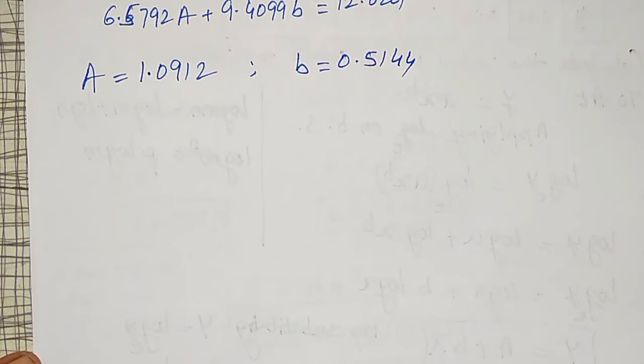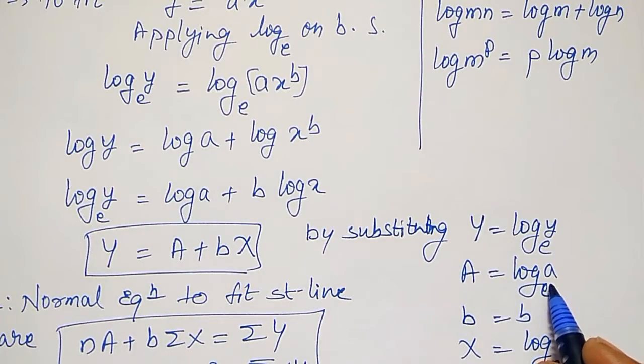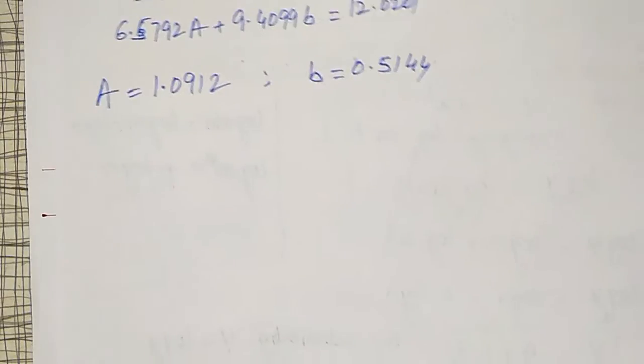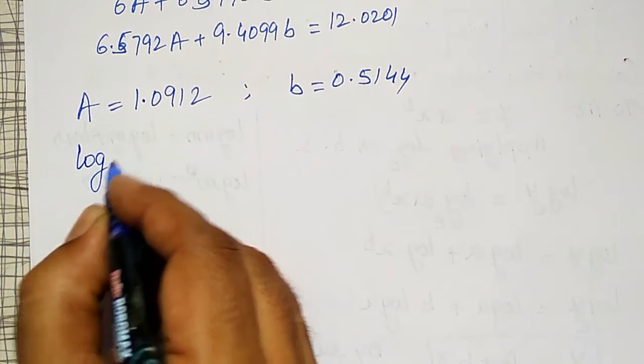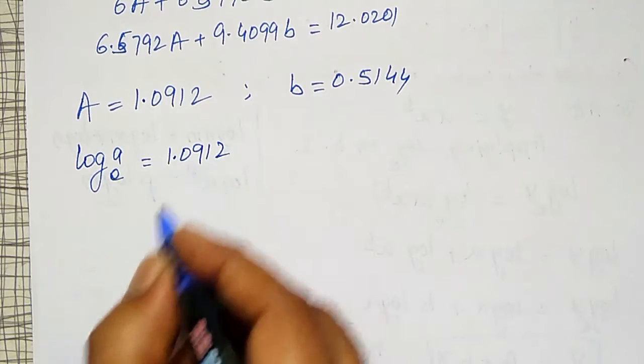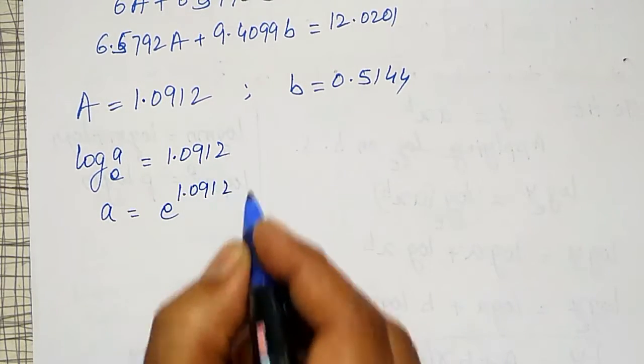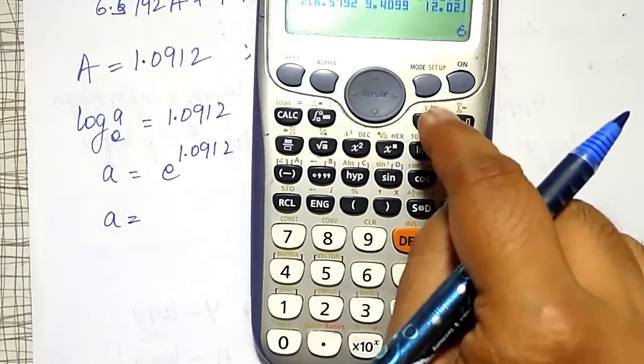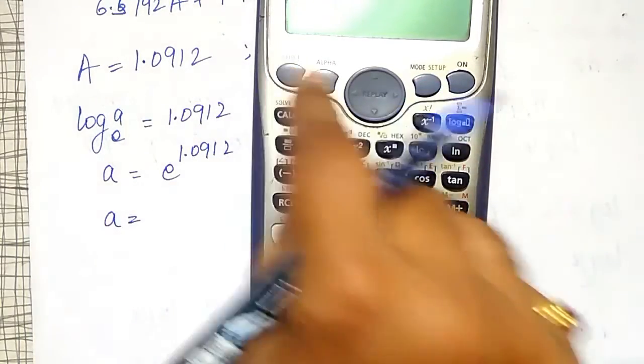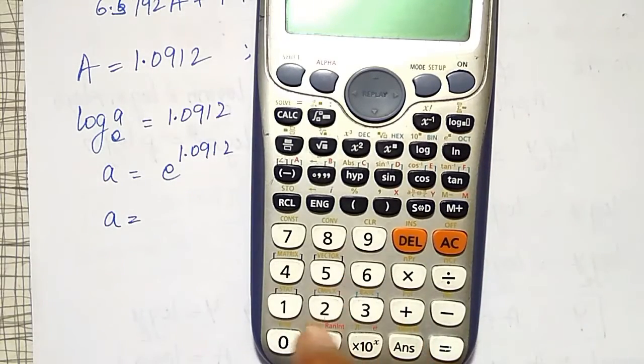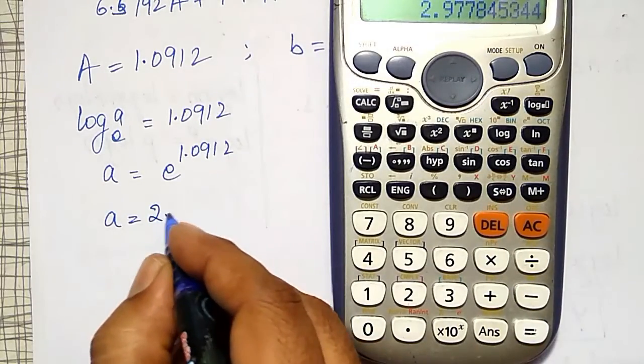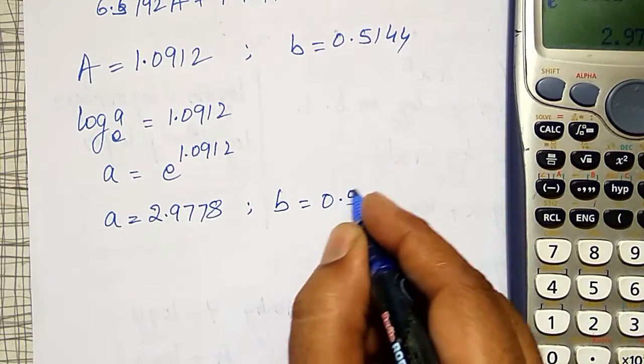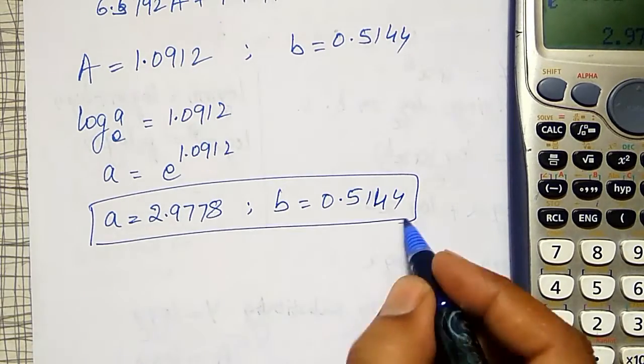This is capital A, but capital A equal to log of A to the base E I have selected. Using this I will find small a. My intention is to find this one. Therefore log of A to the base E equal to 1.0912. Therefore A equal to E to the power 1.0912. Then small a I am going to get it as E to the power. Mode number 1, in that E to the base, shift E to the power 1.0912 equal to 2.9778. And small b I already calculated, 0.5144.